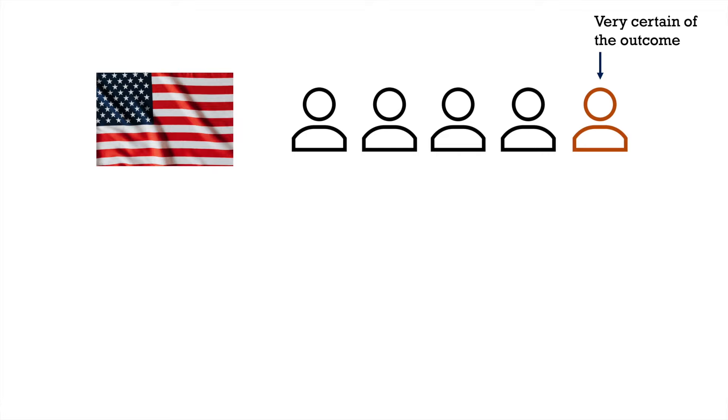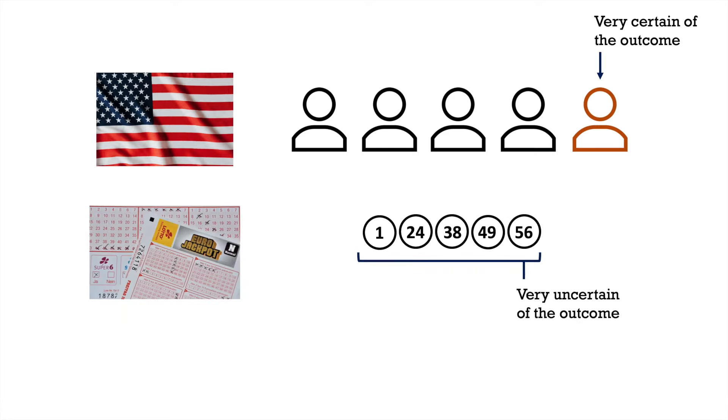However, if the possible outcomes can vary largely, like the distribution of the winning lotto numbers, then there will be great uncertainty in the outcome.